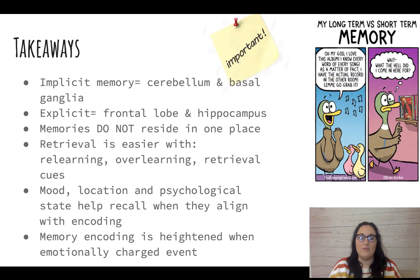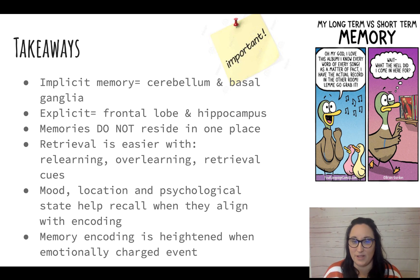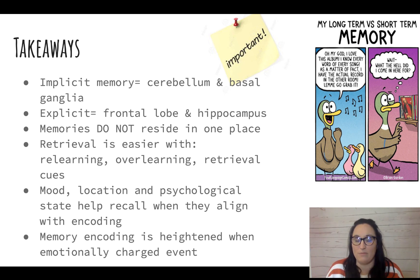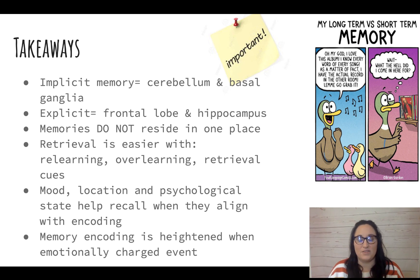Our takeaways: for implicit memory, think cerebellum and basal ganglia. For explicit memory — that's effortful — think frontal lobe and hippocampus as the save button. Memories do not reside in one place; Carl Lashley taught us that. Retrieval is easier with relearning, overlearning, and retrieval cues. Mood, location, and psychological state all impact what we remember and encode. Memory encoding is heightened during emotionally charged events — the brain gets extra glucose to store extra information. That wraps up Module 32.